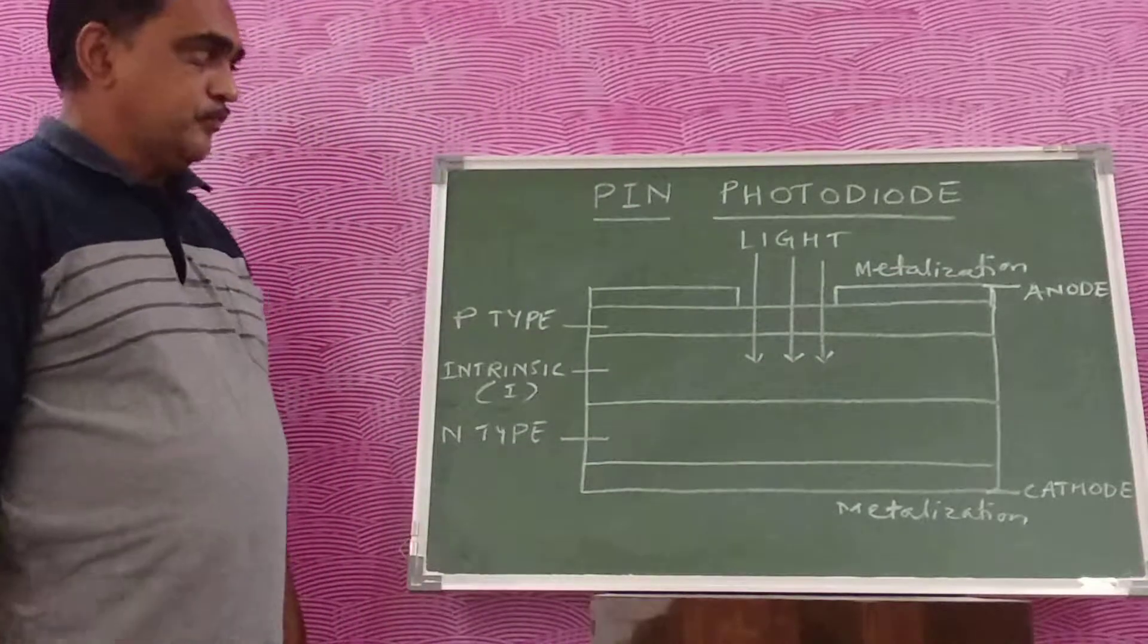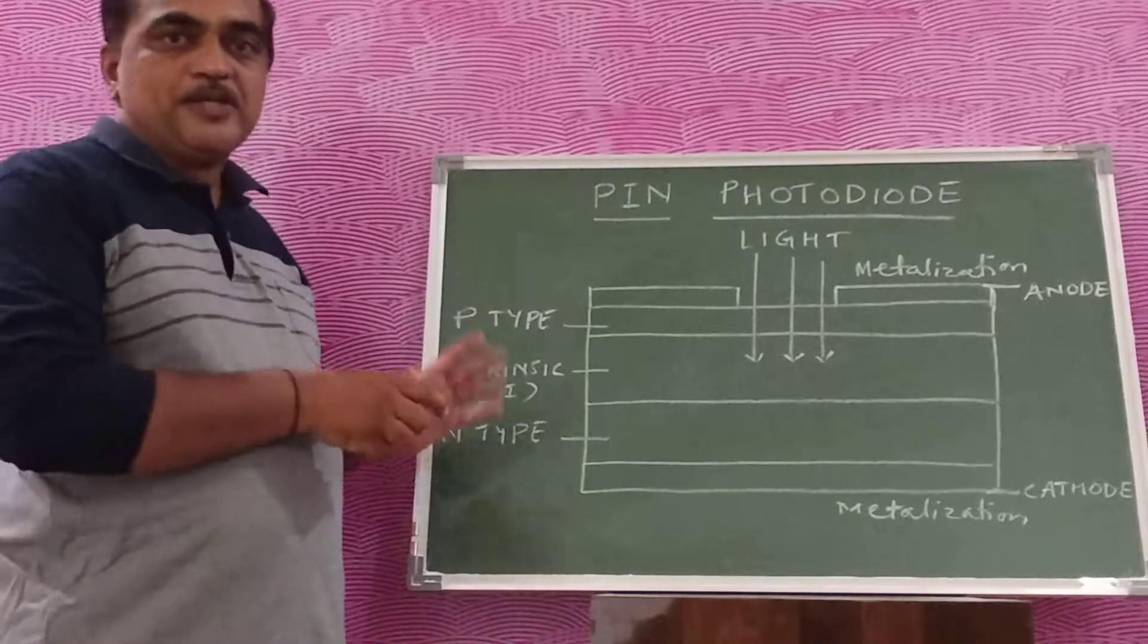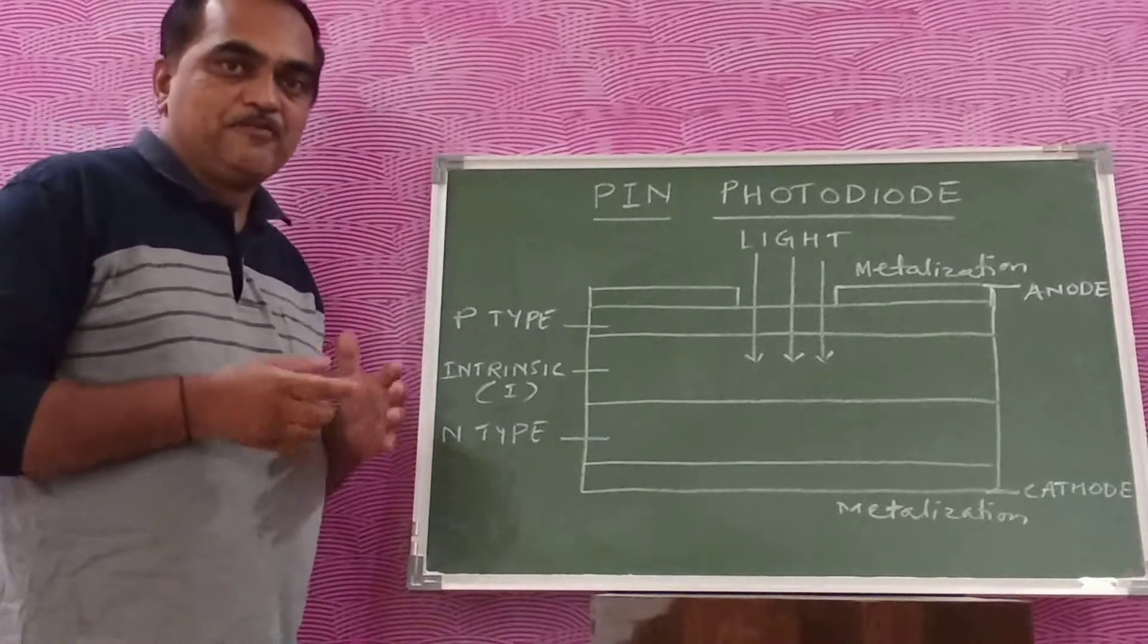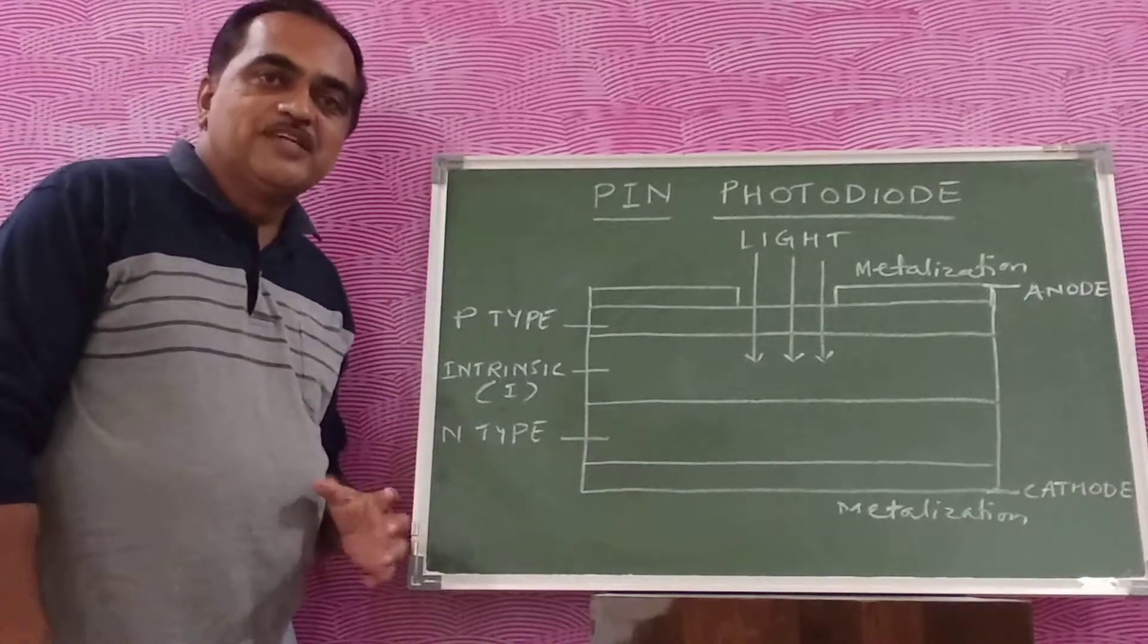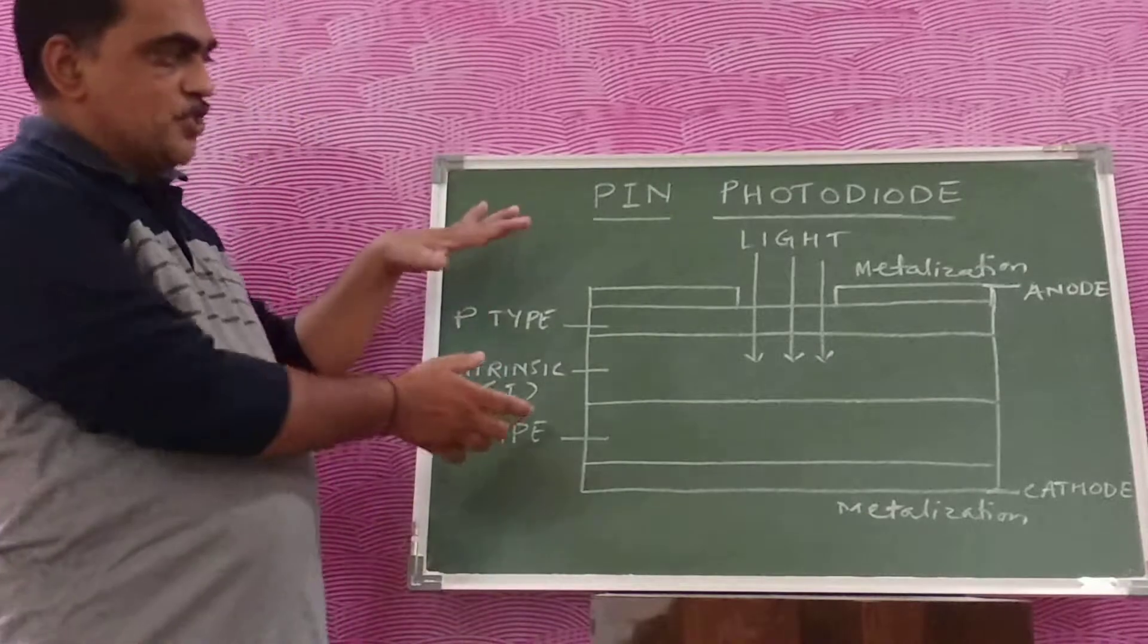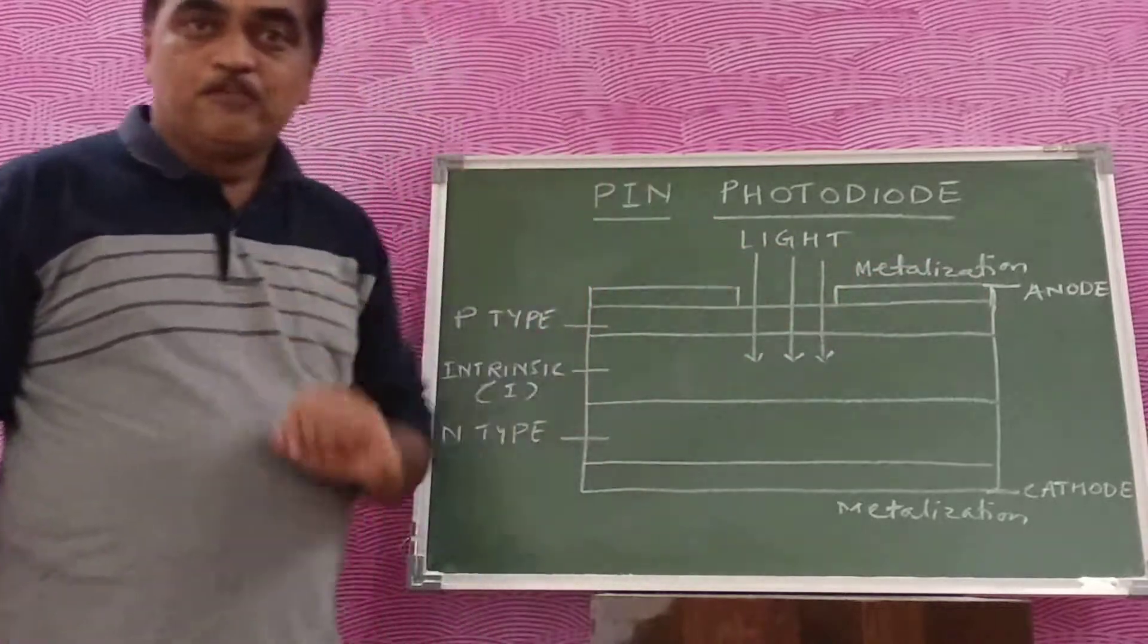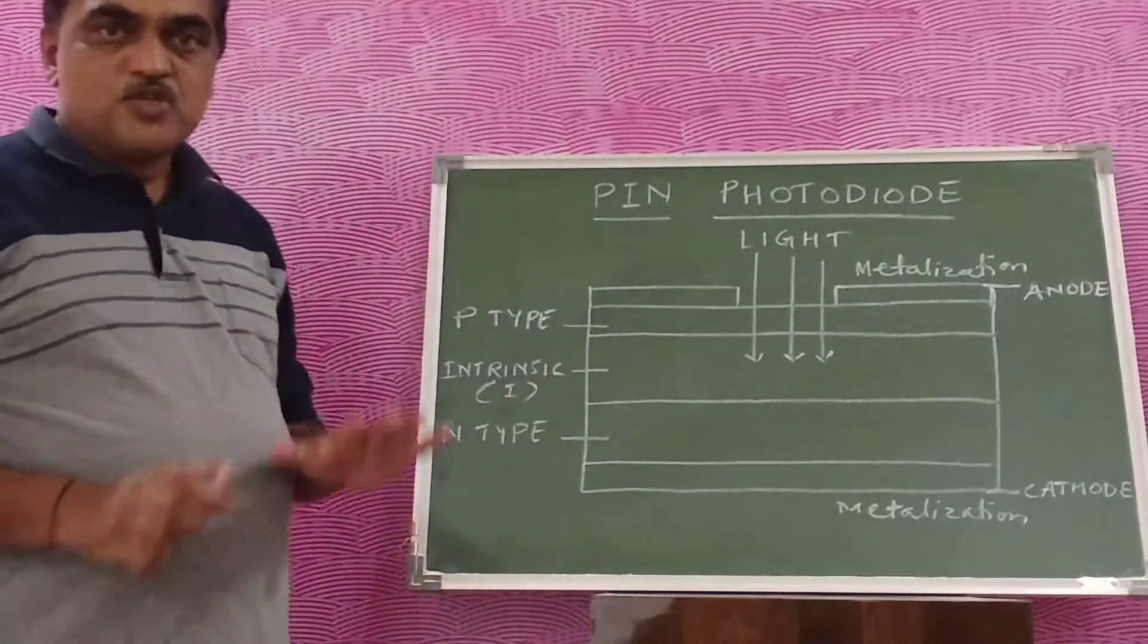Whenever we use this photodiode in our optical receiver to receive data optically, this diode has to be used in a reverse bias condition. Once you apply this diode in reverse bias, that means the anode is connected to the negative of a battery and the cathode is connected to the positive of a battery.